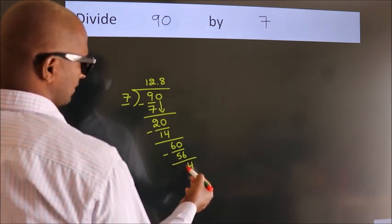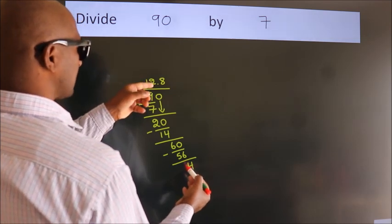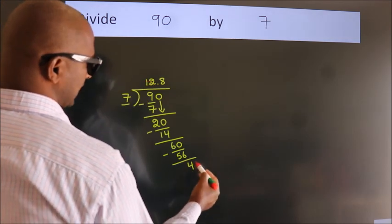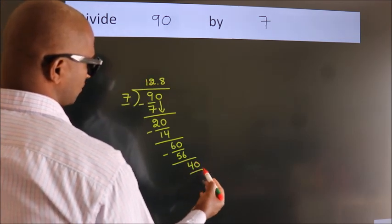After this, we already have the decimal. So directly take 0. So 40.